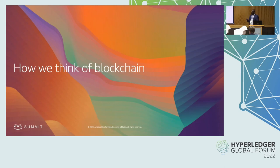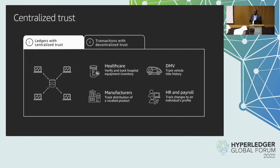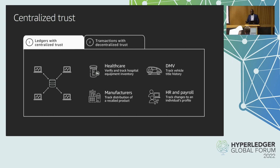Let me dive into how we at AWS think of blockchain. Blockchain is a technology that everybody knows — it's been very popular. Lots of companies are trying to find specific use cases for blockchain. We have two different types of ledger technologies. The first is for centralized trust: a lot of customers think they want blockchain, but technically what they want is a centralized system of record with an immutable ledger — they don't want the information distributed among other parties.